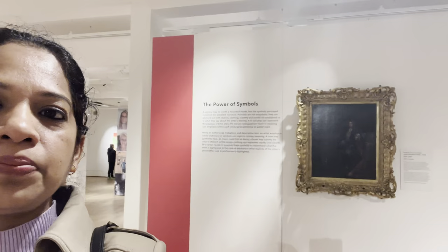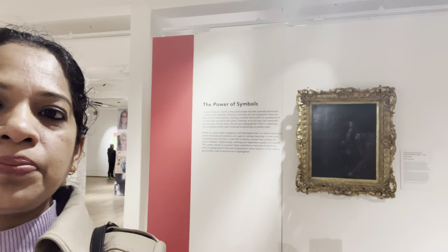Here you can see it's the Power of Symbols. What they're trying to tell here is the various aspects that an artist uses in a portrait to convey the message to the viewers. They could use a lot of props and symbols — such as a rose which indicates love, a lamp which means the passage of time, a book which means the person is intellectual. If they use purple or gold, it indicates royalty. These various aspects are used by an artist to convey meaning to the viewers — that is called the Power of Symbols.